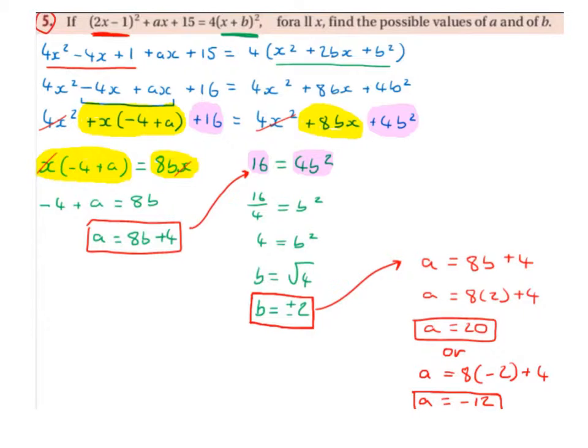We're going to bring down the 4x squared, then we're going to factorise the minus 4x and the plus ax. We're going to take the x outside the bracket as the highest common factor. x into minus 4x leaves us with minus 4, x into ax leaves us with a, and bring down the plus 16. We're going to bring down the equals, the 4x squared, the 8bx and the 4b squared.